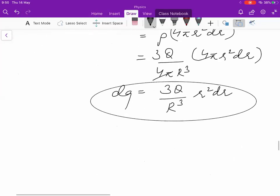So your dq is 3Q/R³ times r²·dr. So this is what is available to you. Now this charge has been brought from infinity.